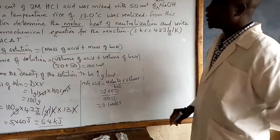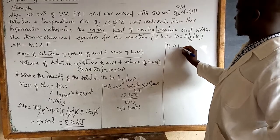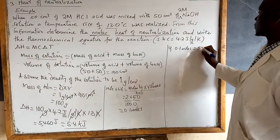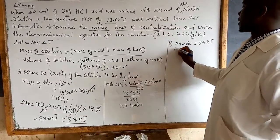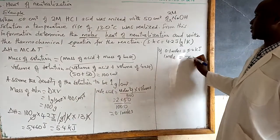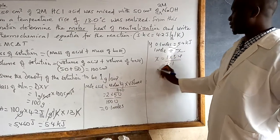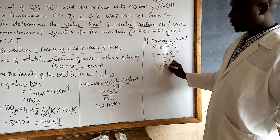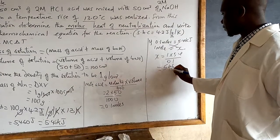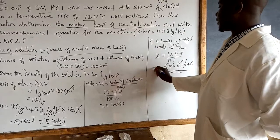So these are the moles of the acid. To calculate the molar heat: if 0.1 moles gives out 5.46 kJ, then for 1 mole we cross-multiply: x = 1 × 5.46 ÷ 0.1, which gives us 54.6 kilojoules per mole.